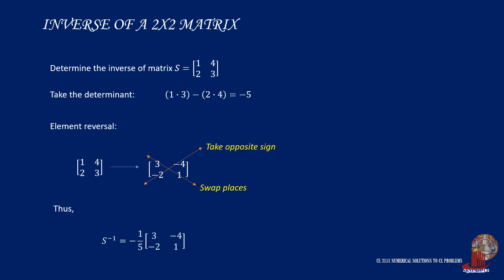So, the inverse of matrix S is the reciprocal of its determinant, that is 1 all over negative 5, multiplied by the reverse matrix. If desired, you can expand to eliminate the scalar outside the matrix, and that can be done as shown.